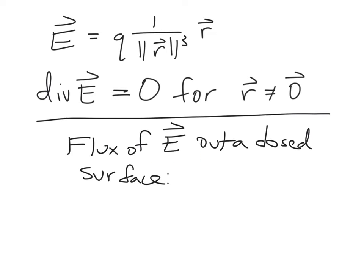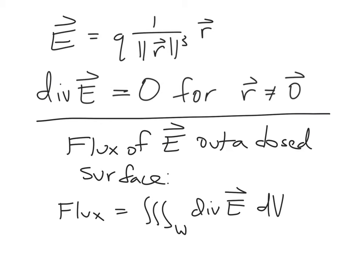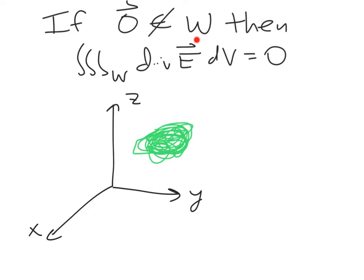What does this tell us about the flux of this field out of a closed surface? By the divergence theorem, the flux equals the triple integral over the region of the divergence of E dV, so long as the divergence is defined everywhere on the region. For a solid region W where the origin is not in the region, the divergence is defined everywhere and equals 0 for this field, so the triple integral is 0. That means the flux out of any region that doesn't include the origin is 0.